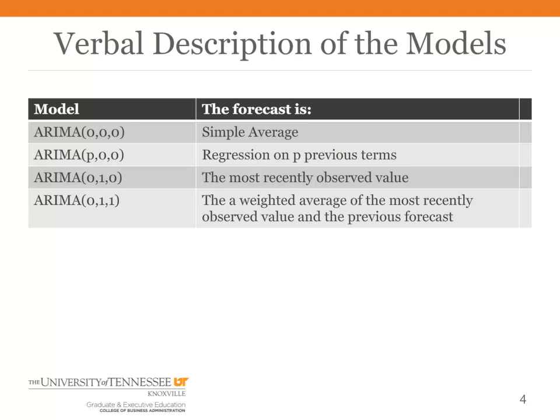The ARIMA P00 says you build a regression model using the P previous terms in your time series. The ARIMA 010 was the random walk model — your forecast is the most recently observed value. And most recently, we looked at the ARIMA 011, which is exponential smoothing: the forecast is a weighted average of the most recently observed value and the previous forecast.